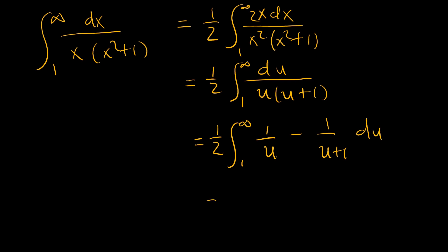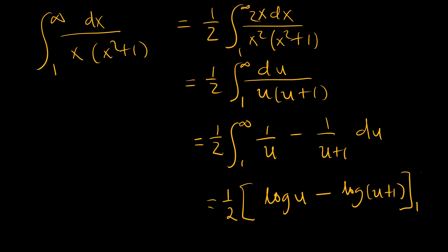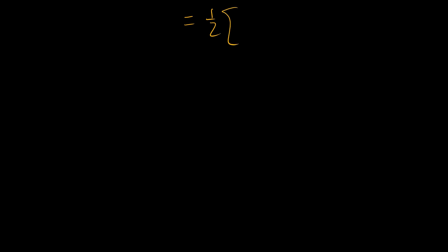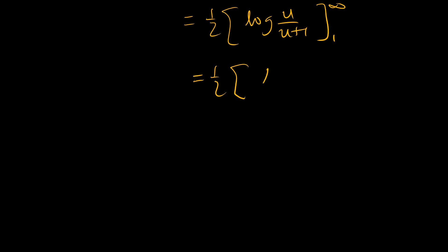Integrating: 1 over u gives natural logarithm of u, and 1 over u plus 1 gives natural logarithm of u plus 1, evaluated from 1 to infinity. We combine these into the log of u over (u+1), evaluated from 1 to infinity, then divide numerator and denominator under the log by u to deal with the infinity.